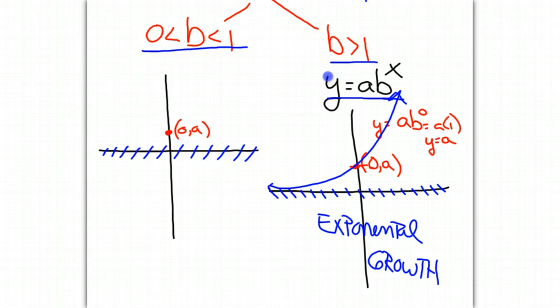But now, since b is a number between 0 and 1, when we take a fraction smaller than 1 and raise it to a power, that number will continue to get smaller. So our graph will get smaller as our x values get bigger, and we get a graph that looks like this, which is exponential decay.